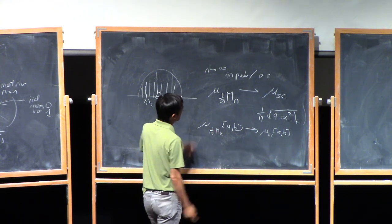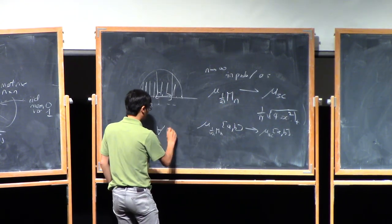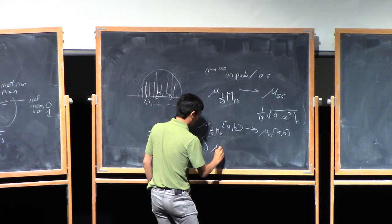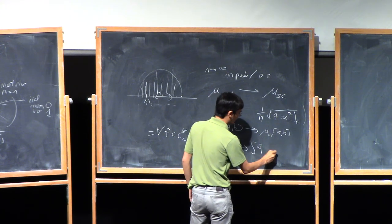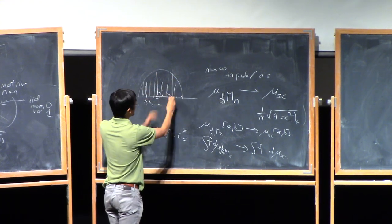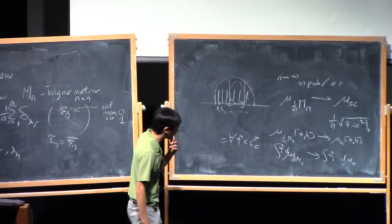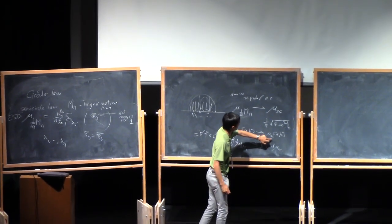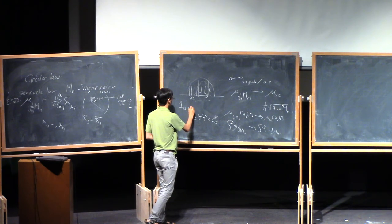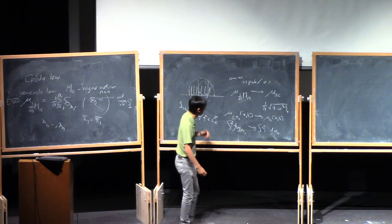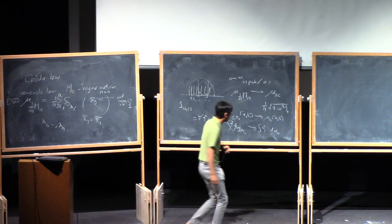Equivalently, this convergence is in the vague topology, which means that for all test functions — nice compactly supported continuous functions — integrating this measure against your test function converges to integrating the same test function against the semi-circle law. These are equivalent because the limit measure is continuous, so you can approximate an indicator function above and below by continuous functions. Anyway, these are analytic technicalities. This is the semi-circle law, which you've already seen many times.